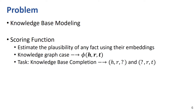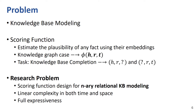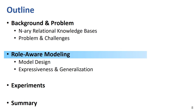An important research problem is to model the knowledge base. In traditional knowledge base, the modeling problem is to design a scoring function to measure if a binary relation can connect the head entity and the tail entity, and a typical task is knowledge base completion. Following the problem in the traditional case, in this work, we want to design a scoring function for the n-ary knowledge base. To adapt to the increasing knowledge data, we require the scoring function to be of linear complexity, and the function should be fully expressive to represent any types of relations, including symmetric relations and inverse relations. These requirements are also the challenges for modeling n-ary knowledge base.